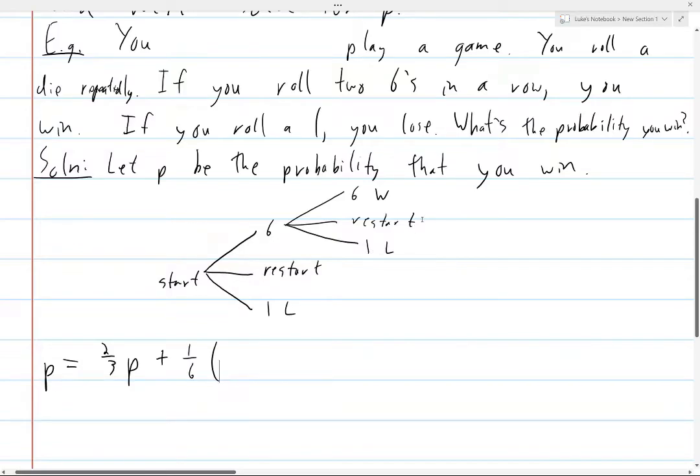And so that doesn't contribute to the equation at all. Here, again, there's a two-thirds chance that you restart. So here, inside this parentheses, we have a two-thirds P. Because again, P is the probability of winning from the beginning. And here we restart, so we go back to the beginning. And then finally, there's this one-sixth chance that you win. And so we'll just add a one-sixth. Because this is the scenario that you actually win.